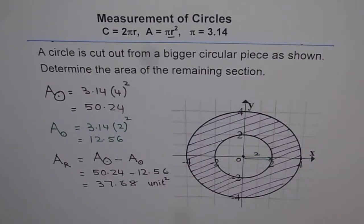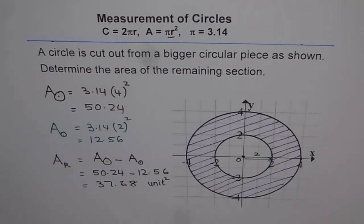Remember, whenever you are trying to find the area of a remaining section, first find the area of the outer piece and then find the area of the inner piece. Once you take the difference of these two areas, you get the area of the remaining section. We will do a couple more questions similar to this — circle from a rectangle, circle from a square — and see how to find the area of the remaining section. Thank you and all the best.